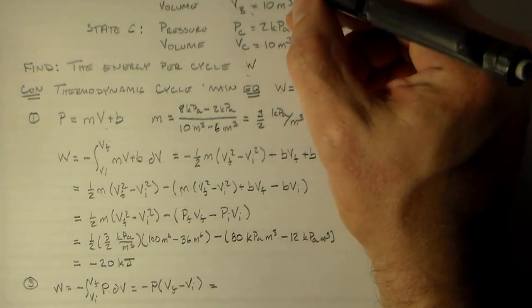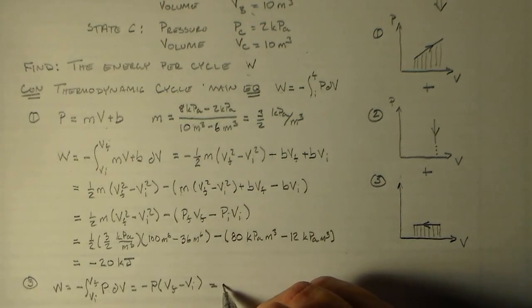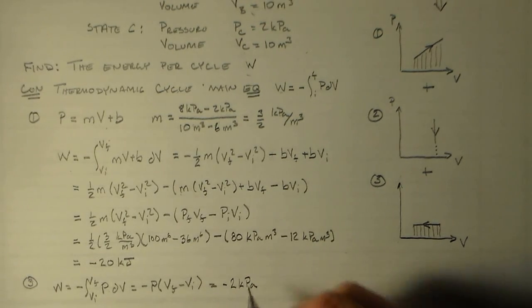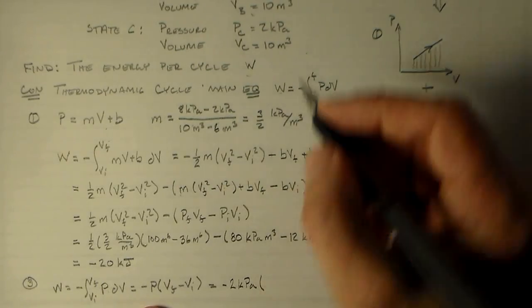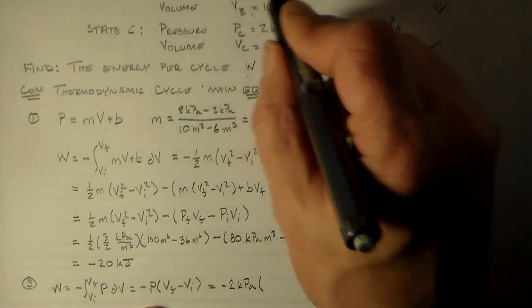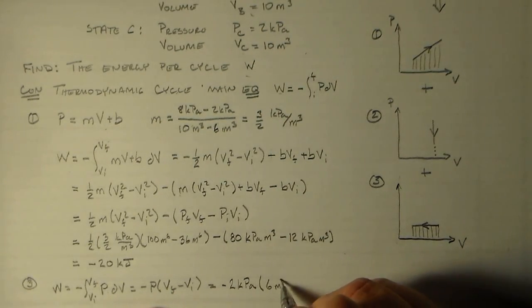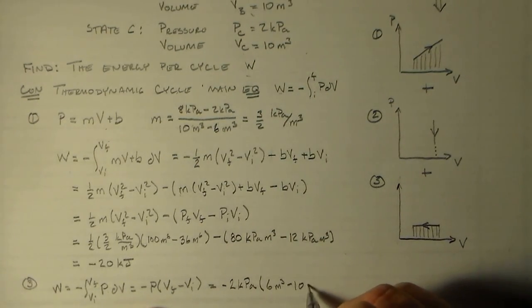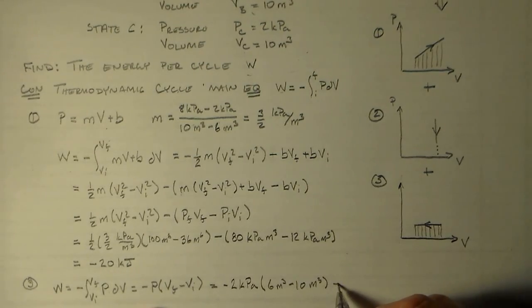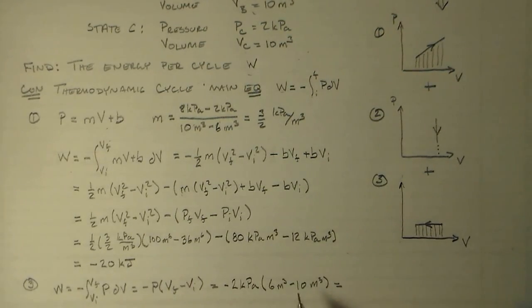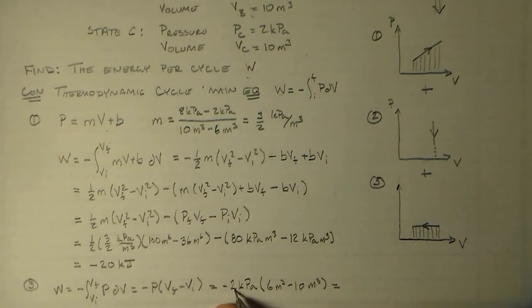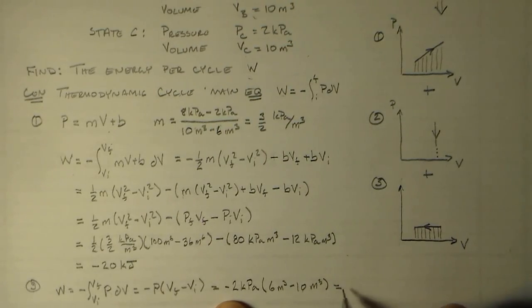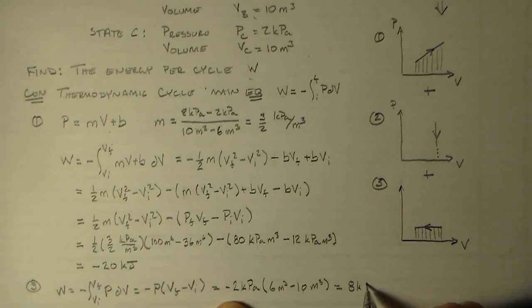This constant pressure is two kilopascals, so we have minus two kilopascals multiplied by VF minus VI. VF in this case is state A, so we have six meters cubed minus 10 meters cubed. So six minus 10 is minus 4 times minus 2 is 8, so we have 8 kilojoules.